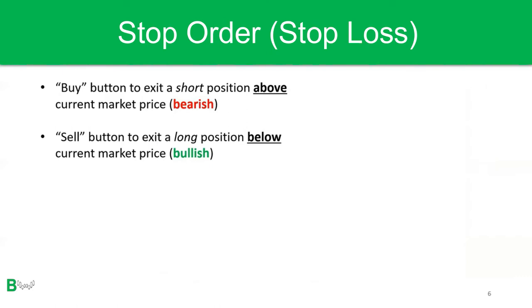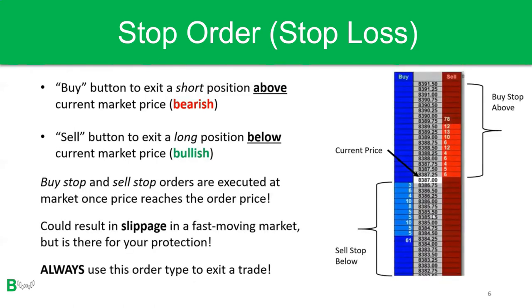Next, let's talk about stop orders, also known as stop losses. If you're in a short position, you place a buy stop order above the current market price to protect profits or prevent further loss. If you're in a long position, a sell stop is placed below the current market price to lock in profits or prevent further loss. Buy and sell stop orders are executed at market once price reaches the order price and could result in slippage in a fast-moving market, but they are there for your protection. You should always use this order type to exit a trade.